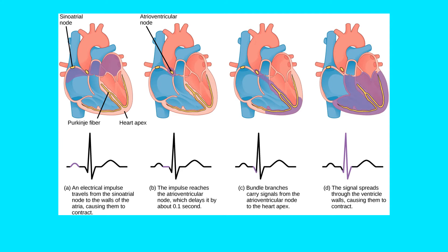This is basically showing what is known as the conduction system. Your SA node, or sinoatrial node, is the pacemaker. These specialized cells produce an electrical current that travels down to stimulate the AV node, or atrioventricular node. You start at the SA node, move down to the AV node, and there's a slight delay. This triggers the two atriums to contract. Then there's another slight delay as it moves down to the Purkinje fibers, which send the electrical impulse to trigger the ventricles to contract.